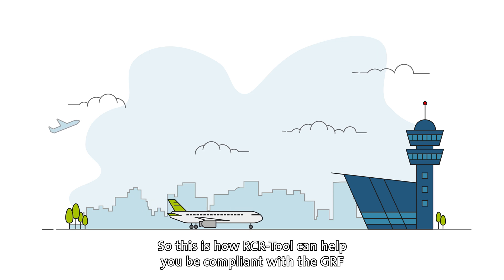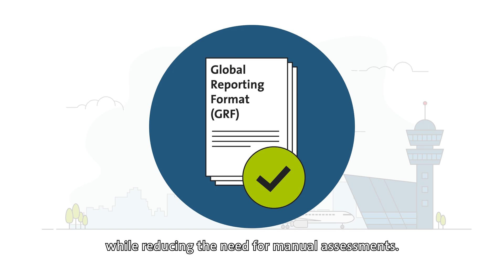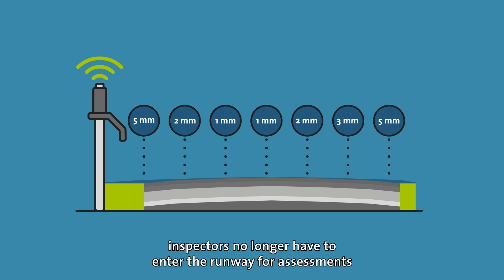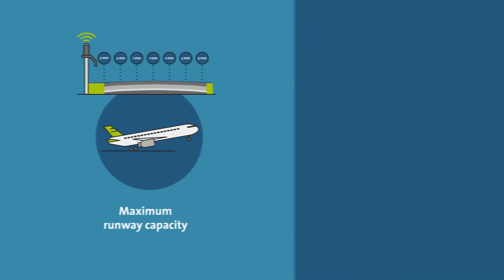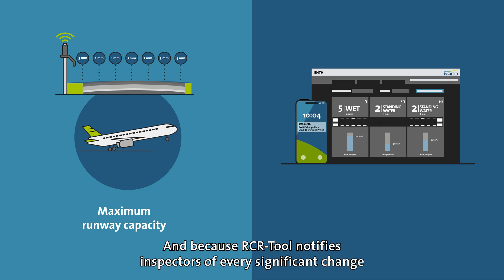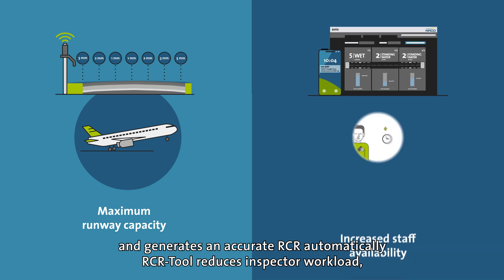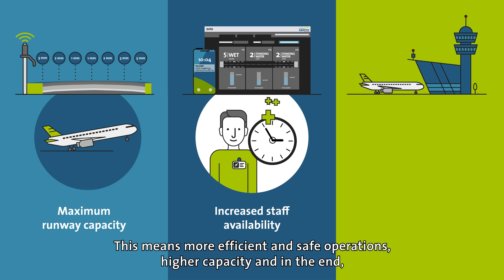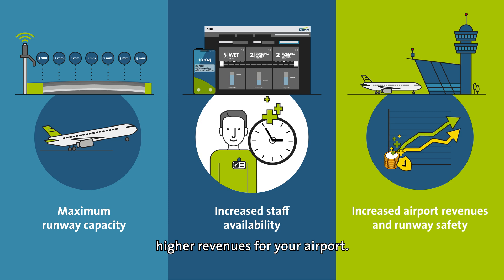This is how RCR tool can help you be compliant with the GRF while reducing the need for manual assessments. By simulating the runway condition in real-time, inspectors no longer have to enter the runway for assessments, leading to higher safety and maximized runway capacity. And because RCR tool notifies inspectors of every significant change and generates an accurate RCR automatically, it reduces inspector workload, freeing up valuable time for other tasks. This means more efficient and safe operations, higher capacity, and in the end higher revenues for your airport.